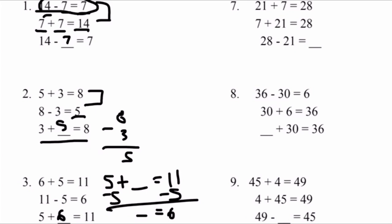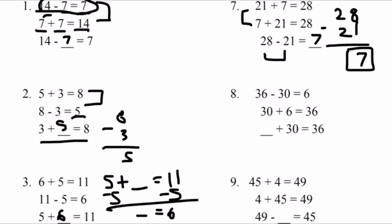Number 7: 21 plus 7 equals 28, and 7 plus 21 equals 28. Then we have the equation 28 minus 21. Based off the information, we know that 21 plus 7 equals 28. Therefore, if you subtract 28 minus 21, we should get 7. Let's double check: 8 minus 1 equals 7, and 2 minus 2 equals 0. So our final answer is 7. 28 minus 21 equals 7.